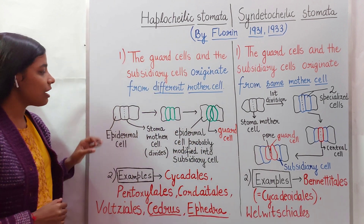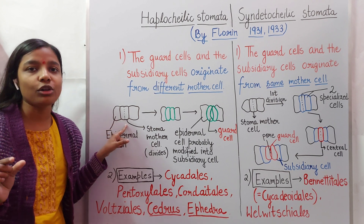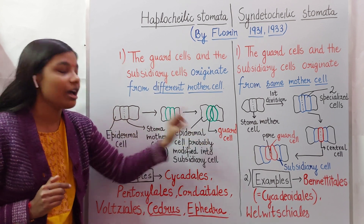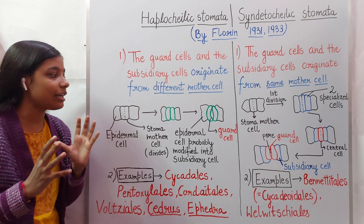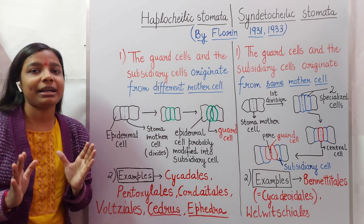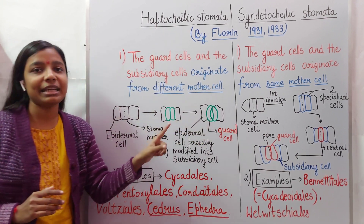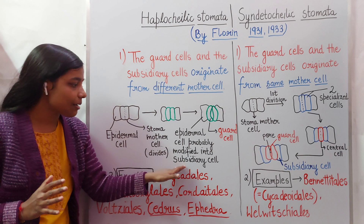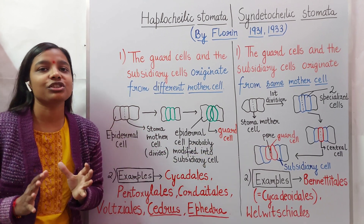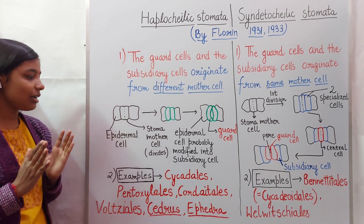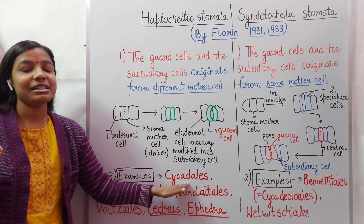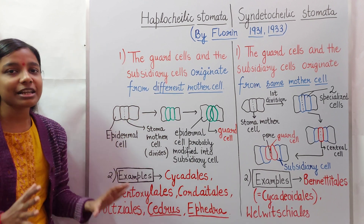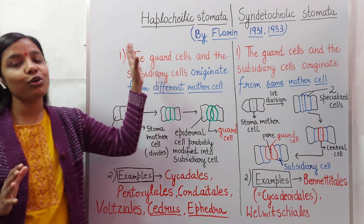Here we have the stoma mother cell — stoma, as you all know, is the singular term for stomata. This stoma mother cell divides and gives rise to guard cells, however the adjacent epidermal cells get modified into subsidiary cells. So in haplochelic stomata, guard cells originate from the stoma mother cell while adjacent epidermal cells are modified into subsidiary cells — they originate from different mother cells. Examples include Cycadales, Cycas, Pteridospermales, Cordaitales, Voltziales, Cedrus, and Ephedra.